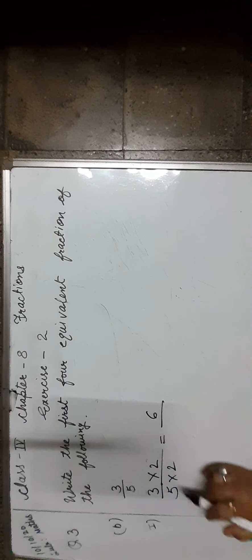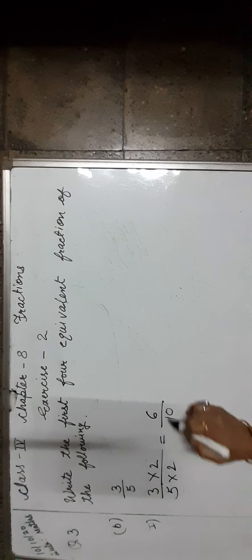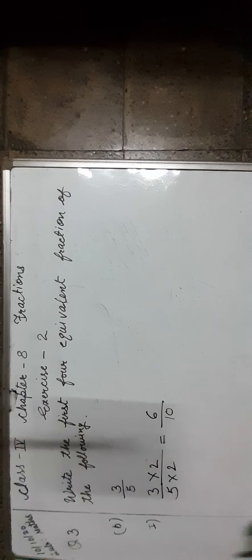Let us do question number B: 3 upon 5. To find out the first equivalent fraction, we multiply both numerator and denominator by 2. Now, 3 twos are 6, 5 twos are 10. So the first fraction is 6 upon 10.